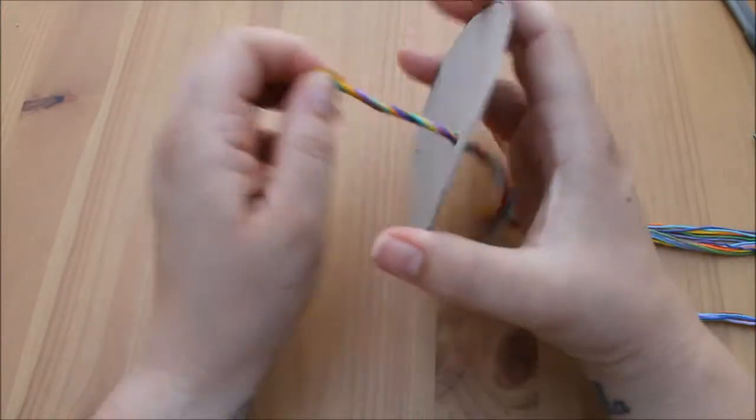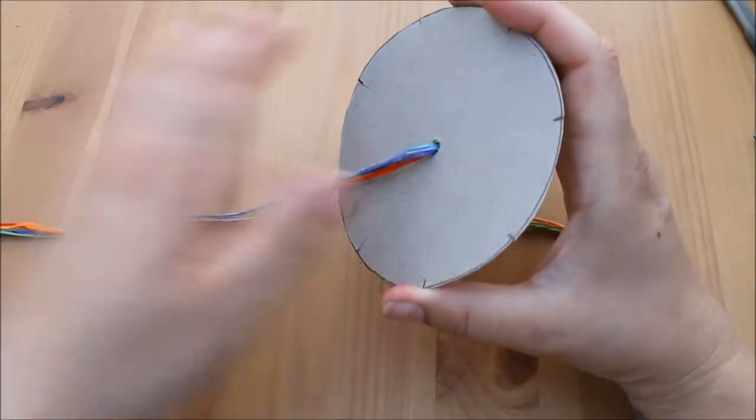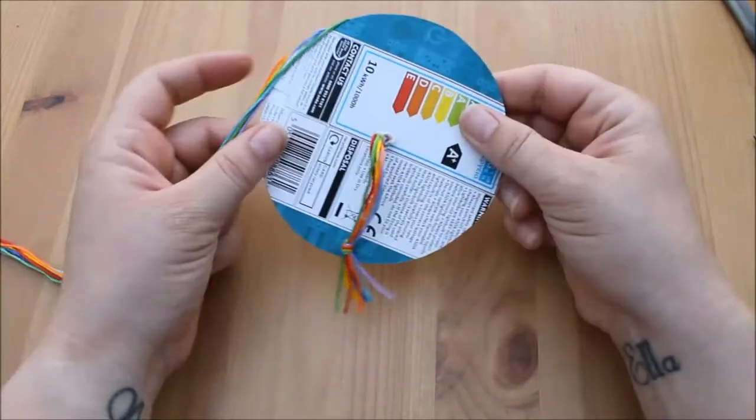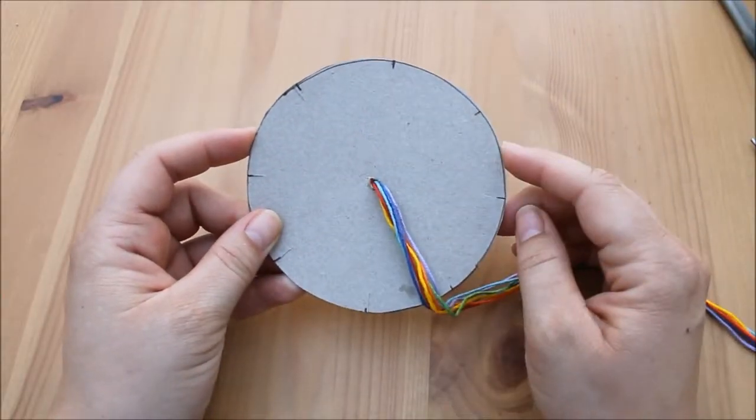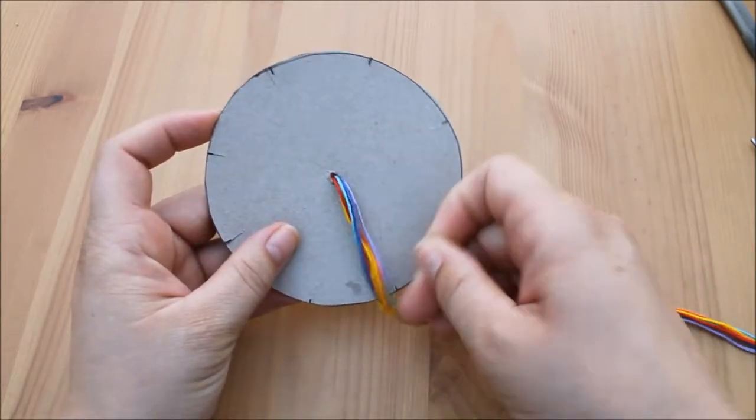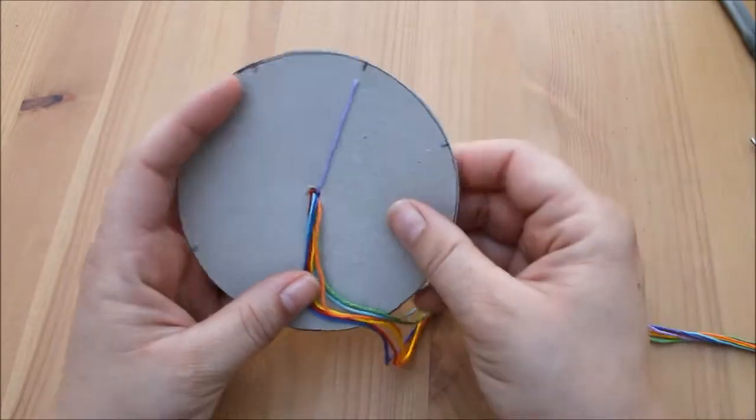So we're going to separate our yarn onto each of the grooves that we've cut around the edges and hook it over.